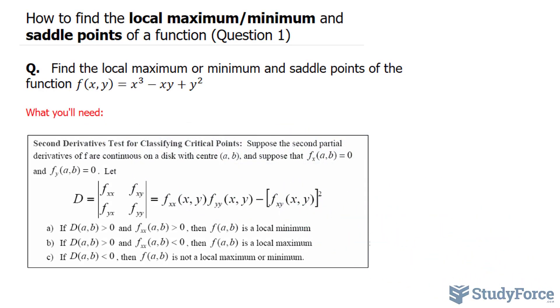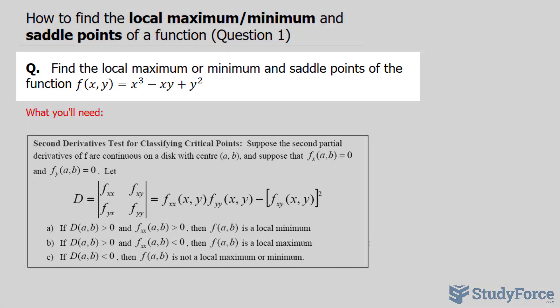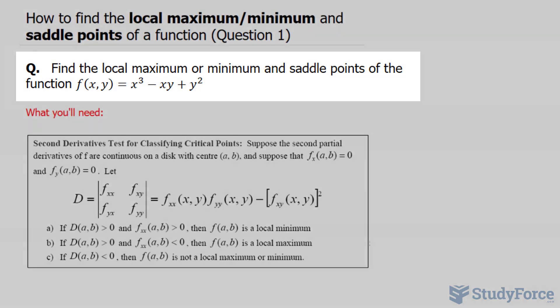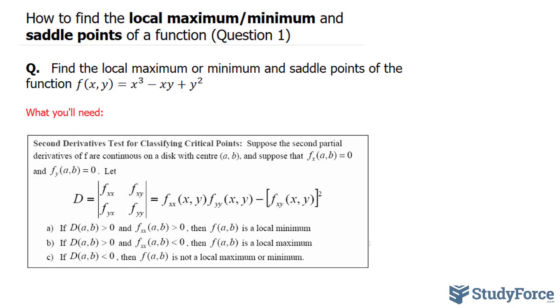In the first question of this series, where we find the local maximum, minimum, and saddle points of a function, we're asked to find the local maximum or minimum and saddle points of the function f(x, y) = x³ - xy + y².